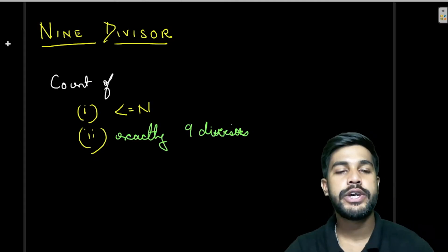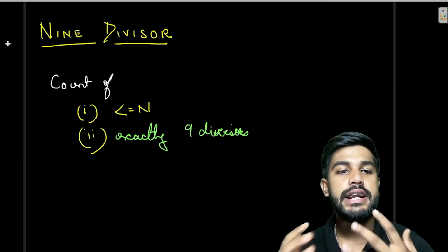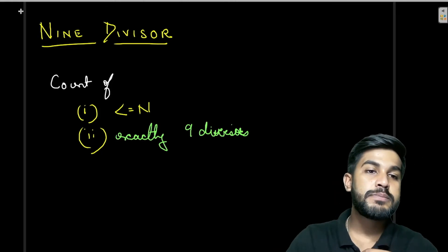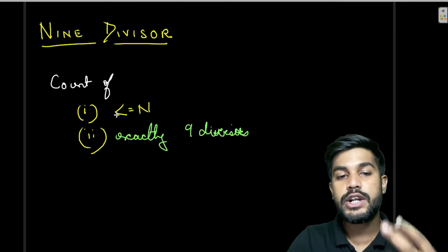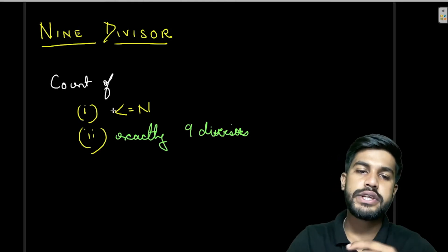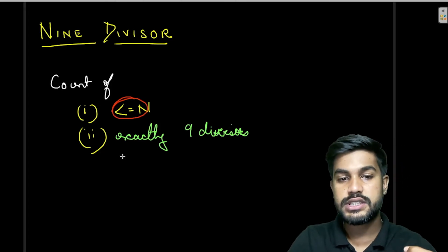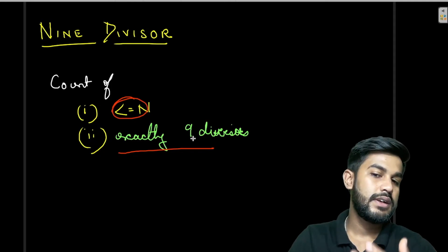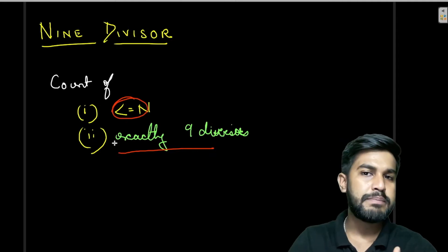Hi and welcome to GeeksforGeeks. Today we would be discussing the problem named 'Nine Divisors'. In this problem we need to find the count of numbers which satisfy two conditions: the number should be less than or equal to N, and it should have exactly nine divisors.